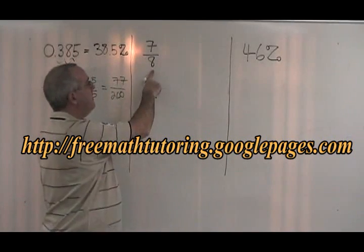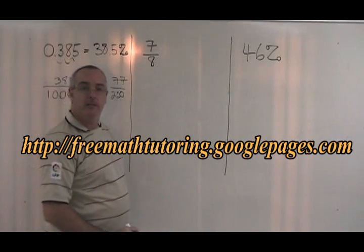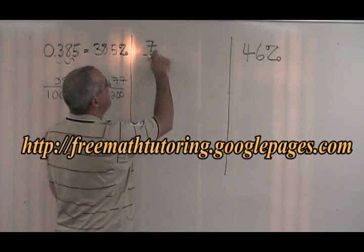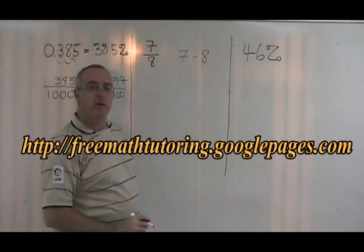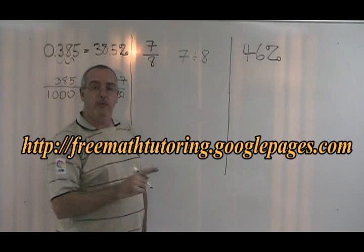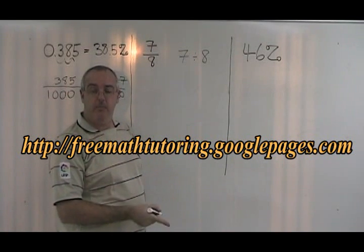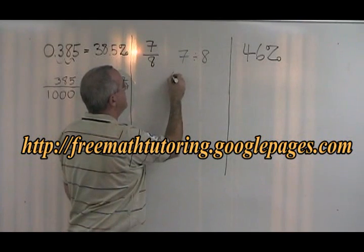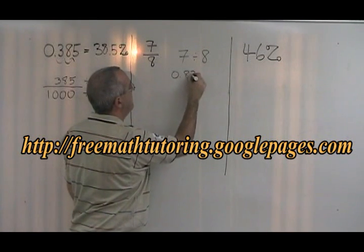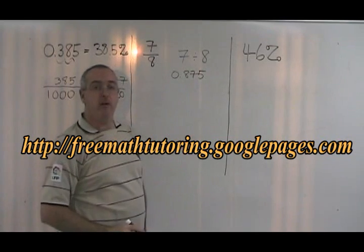To convert a fraction to a decimal, we take the numerator and we divide it by the denominator. We can do this in our calculator or, if required, we can do it with pencil and paper with long division. 7 divided by 8 is equal to 0.875. We now have our decimal.